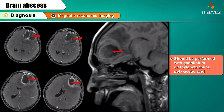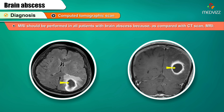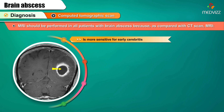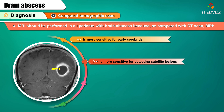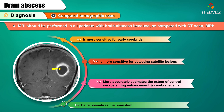MRI should be performed with gadolinium diethylene triamine pentaacetic acid. This agent increases the T1 intensity and causes more prominent enhancement of lesions than CT scan. MRI should be performed in all patients with brain abscess because, compared with CT scan, MRI is more sensitive for early cerebritis, more sensitive for detecting satellite lesions, more accurately estimates the extent of central necrosis and ring enhancement, cerebral edema, and better visualizes the brain stem.